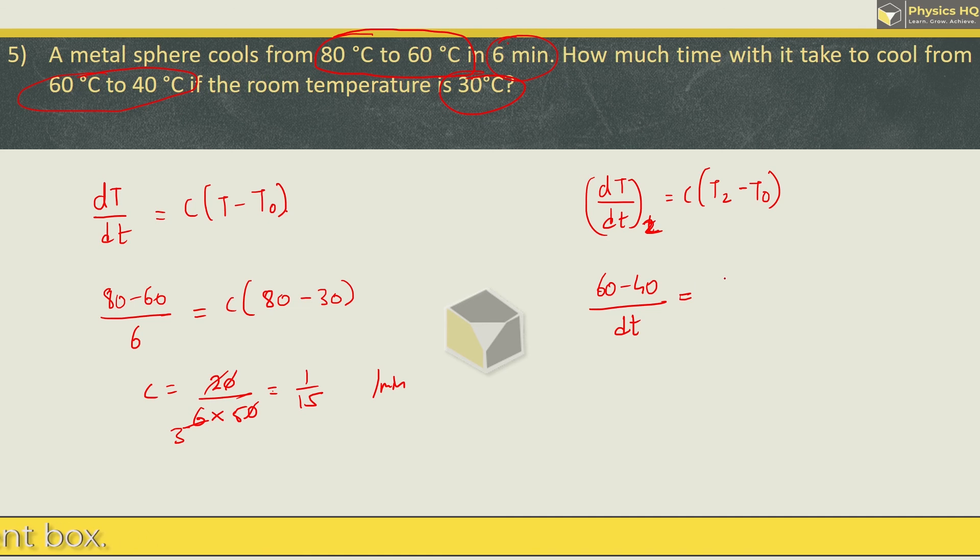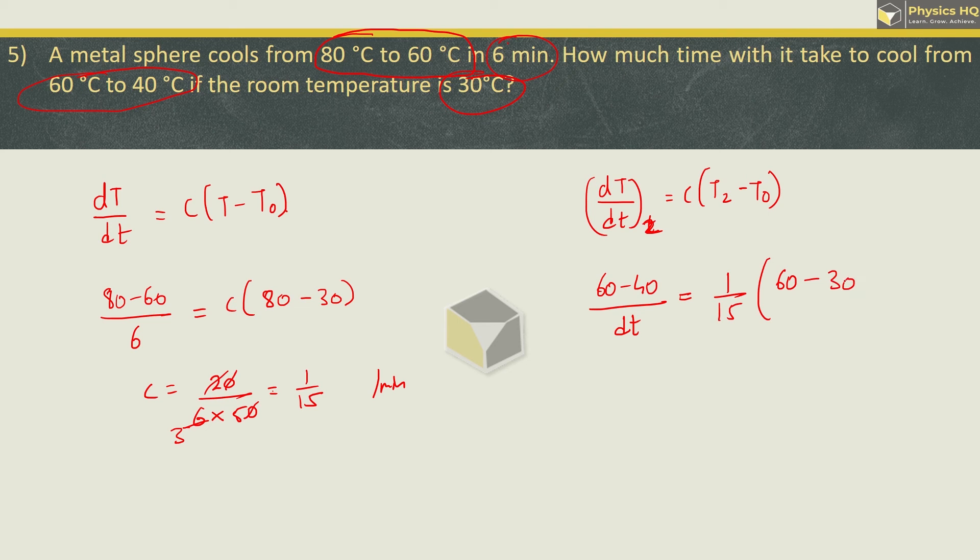This equals c which is 1 by 15. The temperature initially is 60 and room temperature is 30, so this will be 20 upon dt. 60 minus 30 is 30 upon 15. This becomes 15 to the 30 and finally dt will be 20 by 2 which is nothing but 10 minutes. Hope you all understood this.